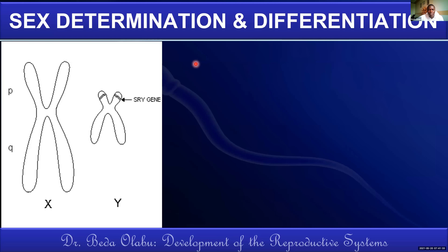There are two types of sperm that the father produces: haploid sperm with a Y chromosome and haploid sperm with an X chromosome. The mother only produces oocytes with an X chromosome. If the Y sperm fuses with the oocyte, the resultant zygote is 46,XY — genetically male. If the X sperm fertilizes the oocyte, the resultant zygote is 46,XX — genetically female.